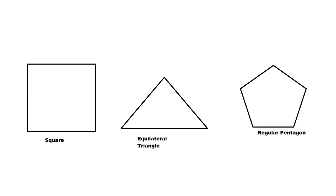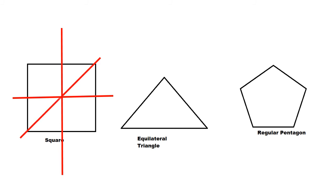Let's see some geometrical shapes. The first shape is a square. If we divide the square with a vertical line we get two equal parts. Similarly, we can draw a diagonal line for two equal parts, another diagonal for two equal parts, and a horizontal line for two equal parts. So this square is a symmetrical shape.